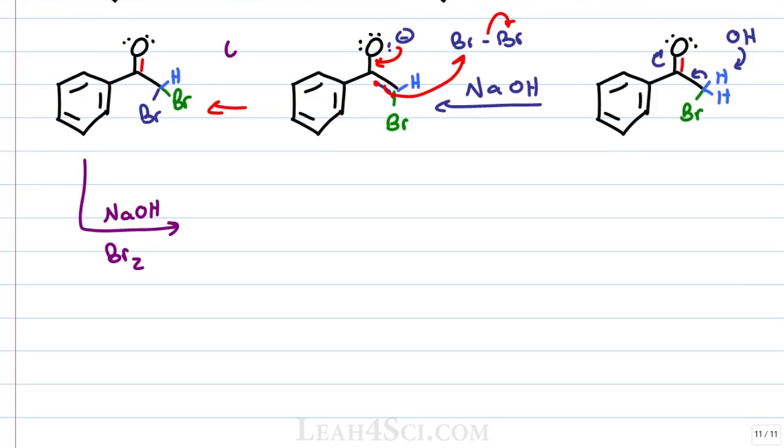We have OH minus grabbing the final alpha hydrogen, collapsing the electrons to form the pi bond, kicking up the pi electrons onto oxygen and giving me the enolate intermediate.